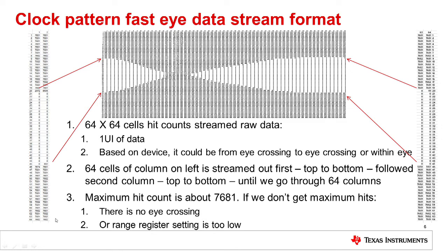Please note there could be a case where we don't see a clear eye boundary like what I have shown here. There is a register called the range register which sets the capture range — like a camera aperture control — that determines how much of the signal we are going to capture. If this setting is too low, we will not capture the whole eye diagram. For this measurement, I used the highest range settings. Now that we have our 64 by 64 cells, let's build our eye diagram externally.